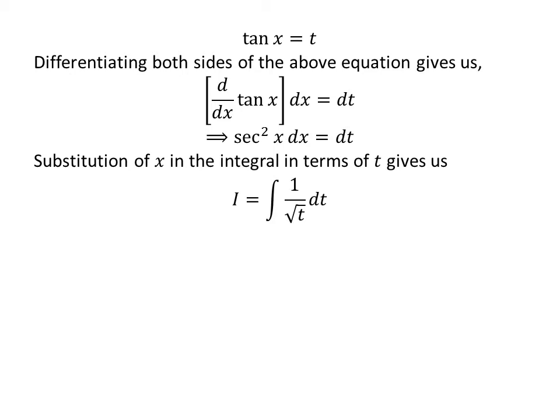In the integral i, let us substitute tangent of x by our assumed value t, and square of secant of x times differential of x by differential of t. So we get i is equal to the integral of 1 upon square root of t with respect to t. In the exponent form, this can be written as i is equal to the integral of t raised to the power of minus half with respect to t.